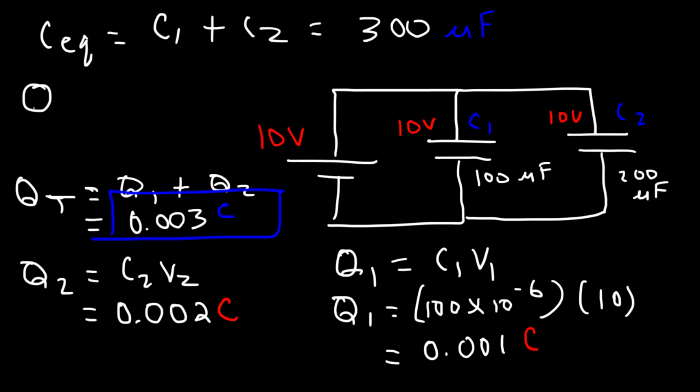You can also find the total charge by taking the equivalent capacitance and multiplying it by the voltage. So 300 times 10 to the minus 6 multiplied by 10 will also give you 0.003. So that's another thing to keep in mind.